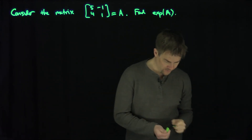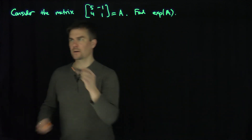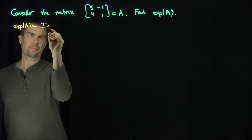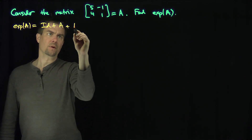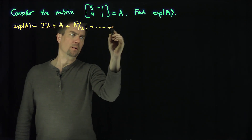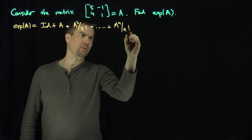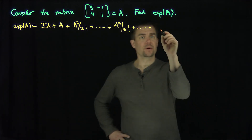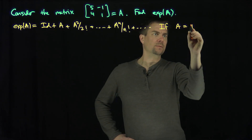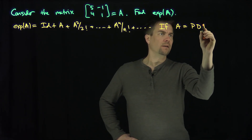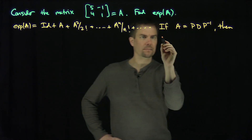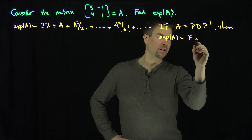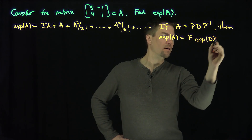We recall that the exponential of A is defined by its power series: the exponential of A is the identity plus A plus A squared over 2 factorial, plus A to the n over n factorial, et cetera. It's very easy to exponentiate if the matrix A is diagonalizable. If A = P D P-inverse, then the exponential of A is just P times the exponential of D times P-inverse. That case is the simple case.